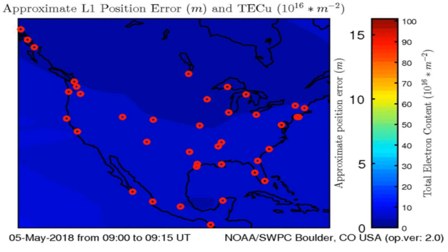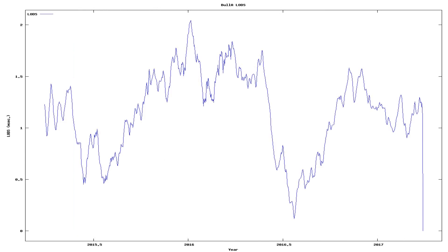And here we see the total electron content above the Earth. Anomalies in total electron content have sometimes preceded earthquakes below that area on Earth.